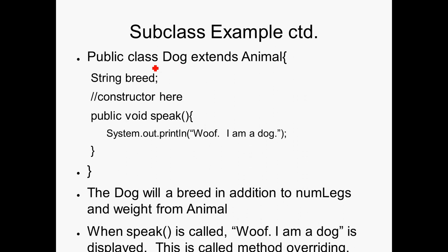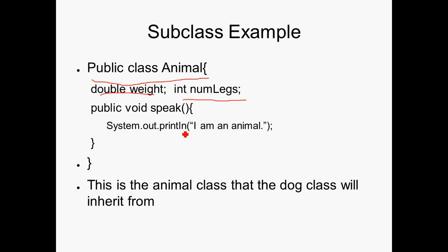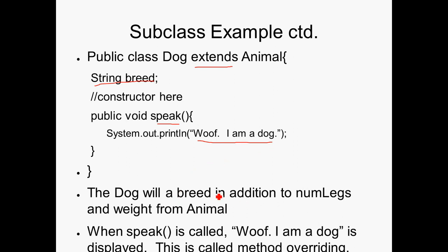Here's our dog class. We say that this public class dog extends animal — this is how we show inheritance in Java. We're going to have another instance variable called breed, and it's going to be a String. And then we're going to modify the speak method, and it's going to say 'Woof, I'm a dog' instead of the previous speak method which says 'I'm an animal.' So the dog will have a breed in addition to numLegs and weight from animal. This is what's called method overriding — it allows us to change the method in higher levels of the class hierarchy.